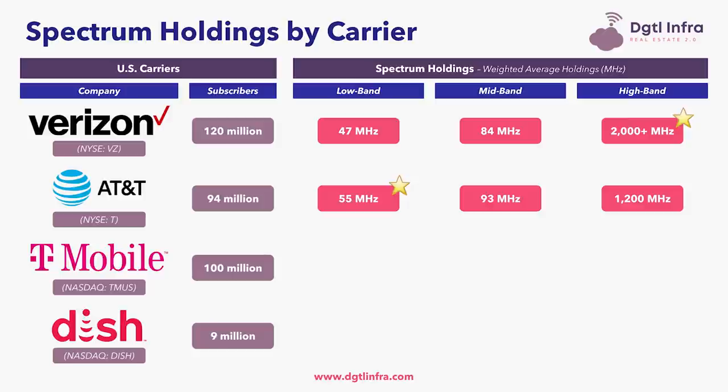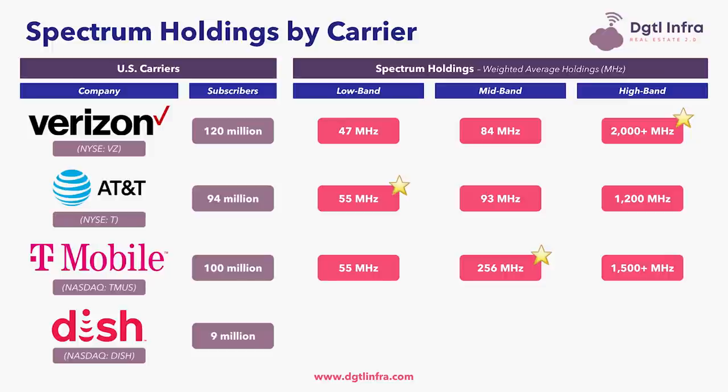Moving to T-Mobile: they are number two out of the four carriers in low-band spectrum, number one in mid-band spectrum, and number two in high-band spectrum. In low-band, T-Mobile holds 55 MHz of spectrum depth. In mid-band, T-Mobile holds 256 MHz of spectrum depth. And in high-band, T-Mobile holds over 1,500 MHz of spectrum depth.